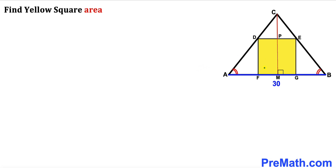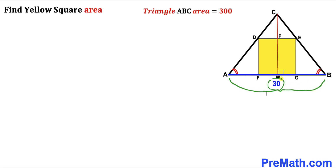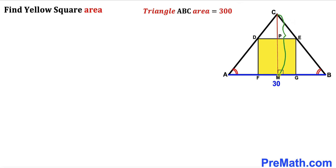Welcome to pre-math. In this video we have a yellow square DEGF fully inscribed in an isosceles triangle ABC, such that the base of this triangle is 30 units and the area of triangle ABC is 300 square units. Furthermore, CM is the perpendicular, and our task is to calculate the area of this yellow square.